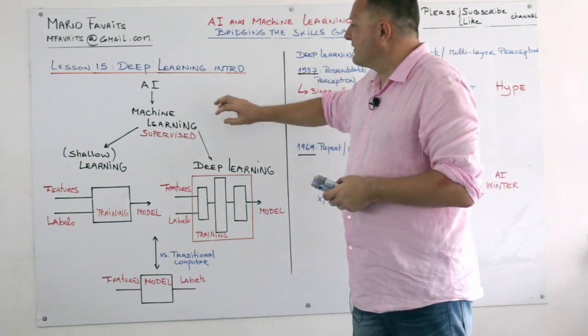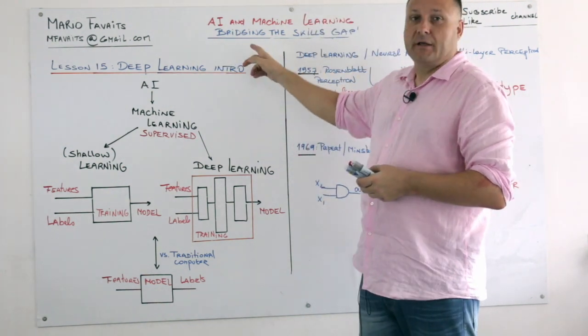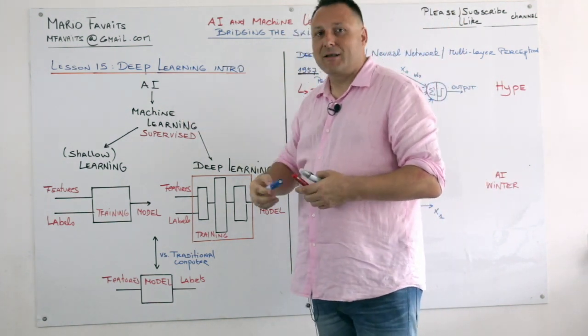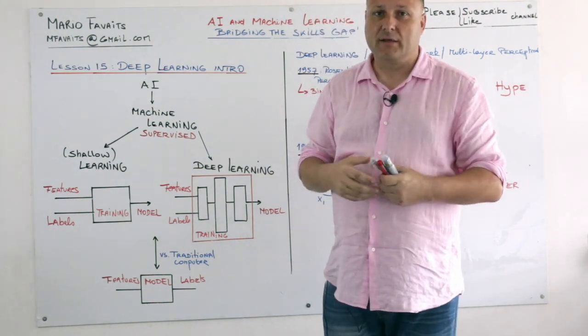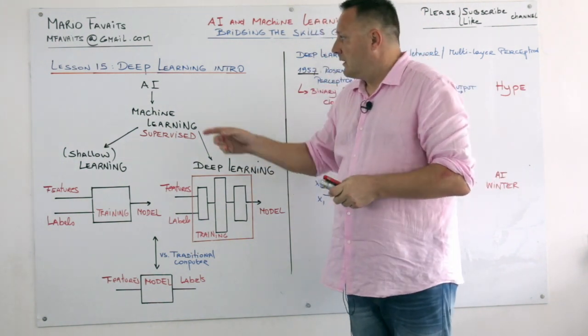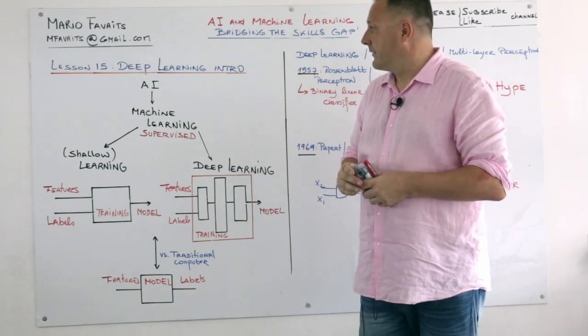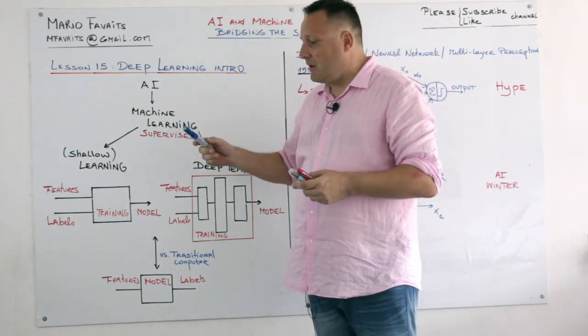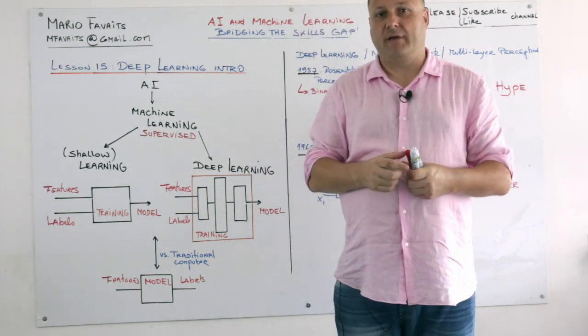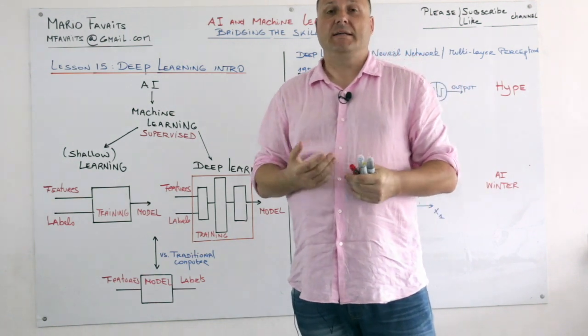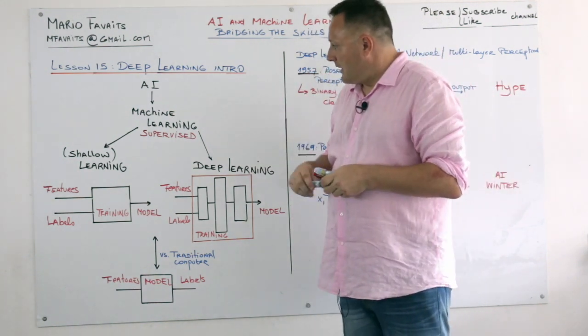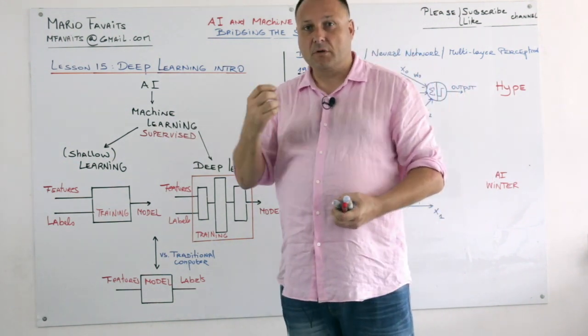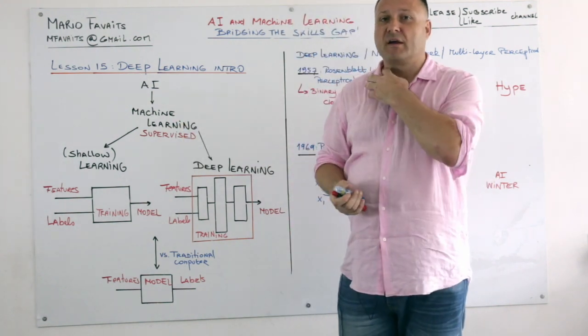So basically we started with AI and machine learning comprehensive course, and we quickly saw in the beginning that AI is everything that has to do with the automation of thought. So calculator is AI, Excel is AI, and then we have machine learning as a subset of AI where the machine is actually learning. And in machine learning we had supervised, unsupervised, and reinforcement learning. Here we only take a look at supervised learning.